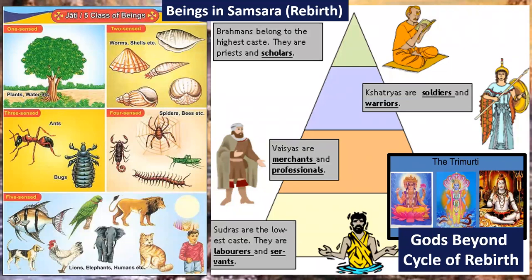There are five classes of beings. Hindu is not a unified religion. Some Hindus believe there are one-sensed organisms — you could actually be a tree, a shell, or the animal living inside a shell — three-sensed, four-sensed, five-sensed. Some Hindus believe you can be in tree form before you move into animal form, but most Hindus believe you're in animal form and slowly move your way up until you attain Moksha in a human form.